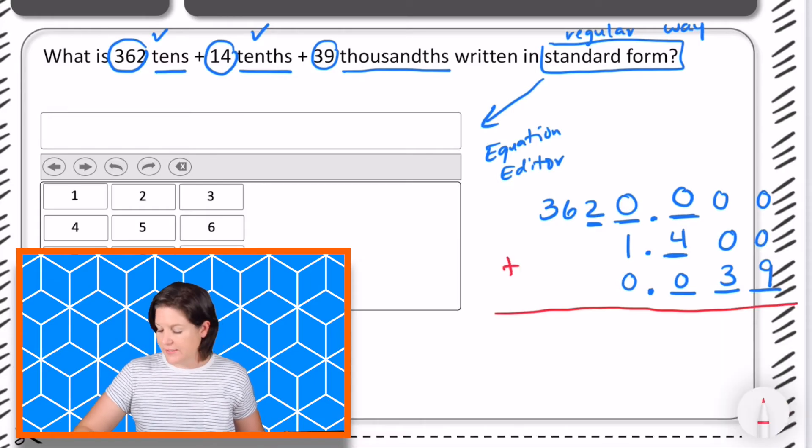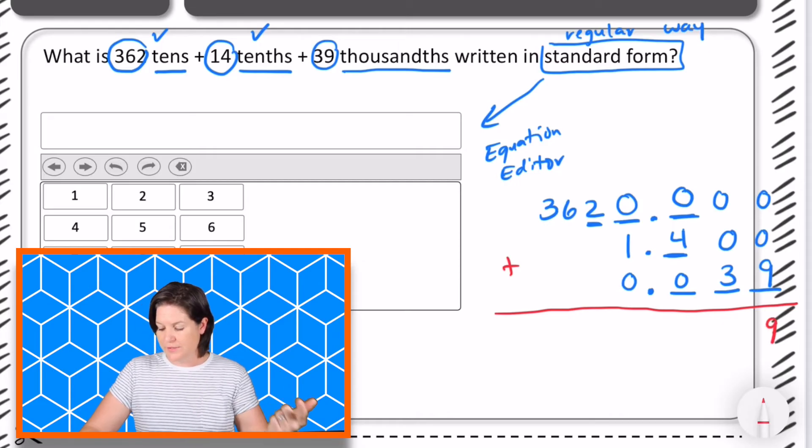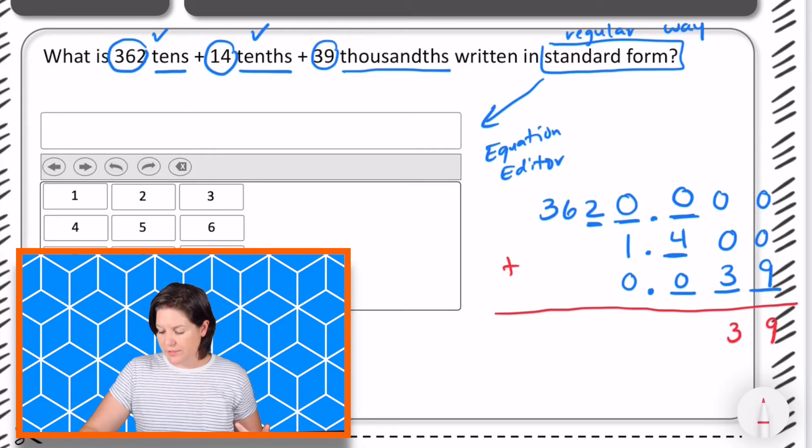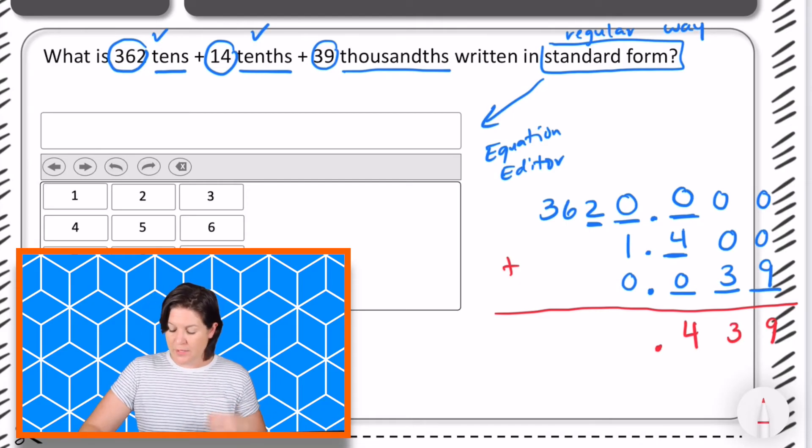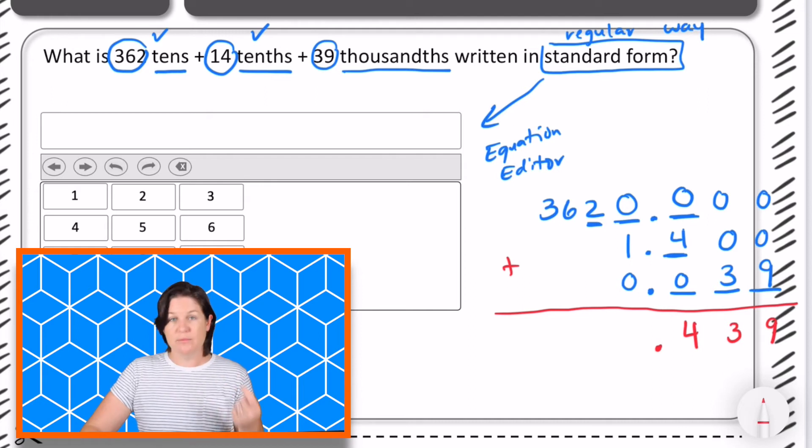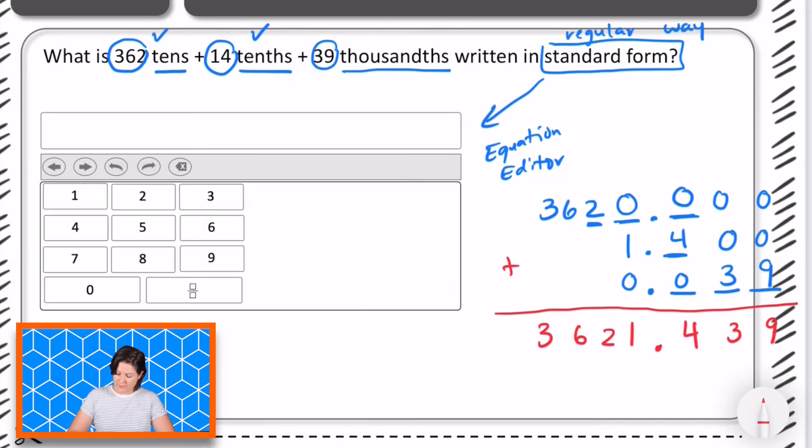Okay so now we're adding this together. I've got zero zero and nine is nine. Zero zero and three is three. Zero four and zero is four. Bring down my decimal point so I've got four hundred thirty nine thousandths so far. Zero plus one plus zero zero is one and bring everything else down. So my final answer is three thousand six hundred twenty one and four hundred thirty nine thousandths.